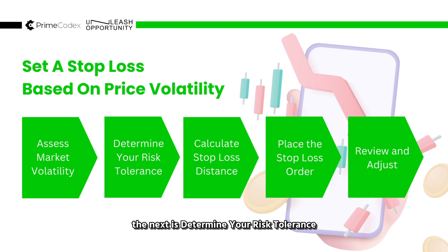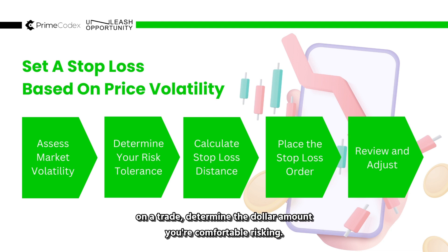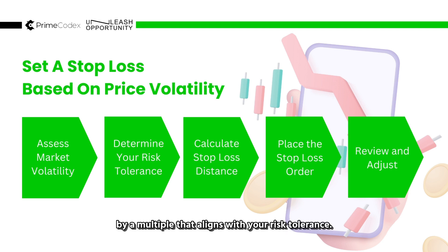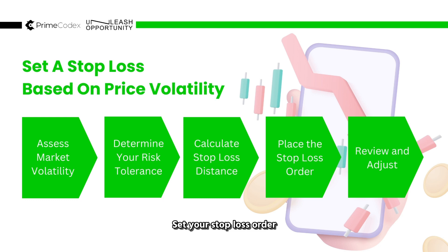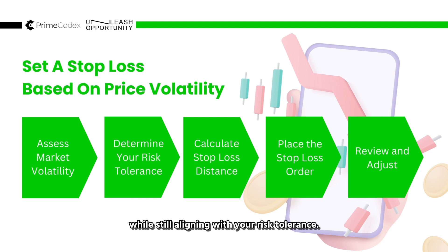Next, determine your risk tolerance as a percentage of your trading capital. For example, if you're willing to risk 2% of your capital on a trade, determine the dollar amount you're comfortable risking. Then calculate the stop loss distance by multiplying the volatility measure by a multiple that aligns with your risk tolerance. Place your stop loss order at the calculated distance from your entry point, ensuring that the stop loss level provides a reasonable buffer against price fluctuations while still aligning with your risk tolerance.